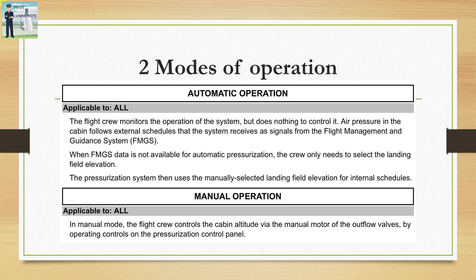There are two modes of operation: automatic operation and manual operation. In automatic operation, the flight crew does nothing to control the system — it is fully automatic — but the system needs to be monitored from the cruise page and the cabin pressure page. In automatic mode, there could be a situation where the landing airport elevation is not in the FMGS data, in which case it needs to be selected manually from the overhead panel.